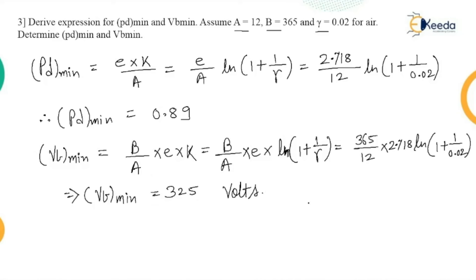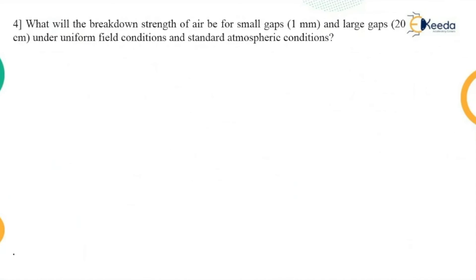So this third numerical covers finding VB minimum and pd minimum; the derived expression is already covered in the theory class. Now let us discuss the last numerical, numerical number four. Find the breakdown strength.